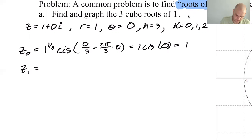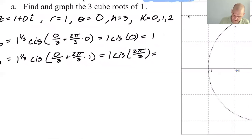Okay, so z₁. So this is when k is equal to 1. It's going to be 1 to the 1/3. That doesn't change, cis 0 over 3 doesn't change, 2π over 3 doesn't change, and then this will become 1. So this is 1, cis 2π over 3. So that's a famous one, right? So that's negative 1/2 plus √3 over 2i.